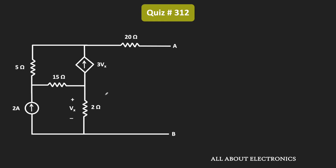Since the circuit contains both independent as well as dependent sources, to find the Norton's equivalent resistance, first we will find the Thevenin's equivalent voltage seen across terminals A and B, and then we will find the short circuit current. The ratio of this Thevenin's equivalent voltage to the short circuit current will give us the Norton's equivalent resistance.